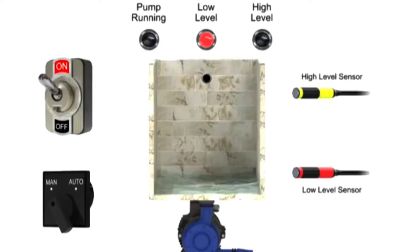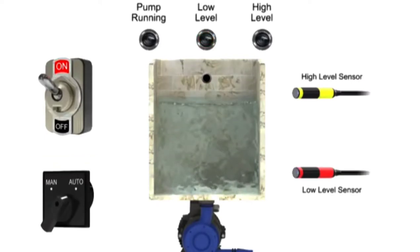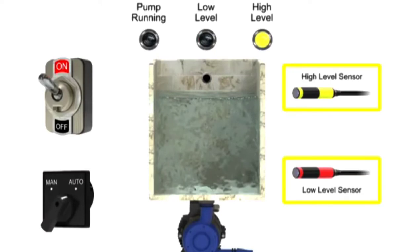The Automatic mode of operation is selected by turning the switch to Auto. The program will control the discharge pump motor automatically by monitoring the high and low-sensor switch inputs.